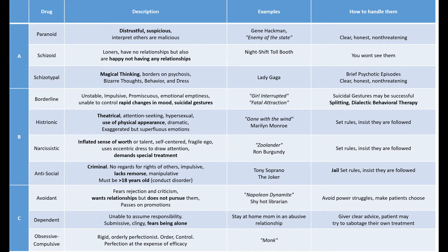We're going to divide all of these patients up, as you can see we've done on the table, into clusters. Cluster A is subdivided into three personality disorders: paranoid, schizoid, and schizotypal. You're not going to confuse one for the other, but just know that they are all Cluster A — they're all a little weird.